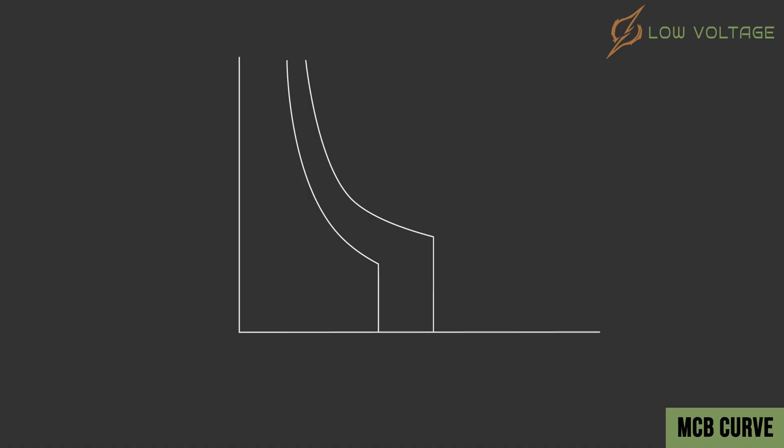Let's first understand how MCB Curve works. The horizontal axis shows current in amperes, and the vertical axis shows time in seconds, so it is the relation between current and time and how the MCB will behave accordingly.